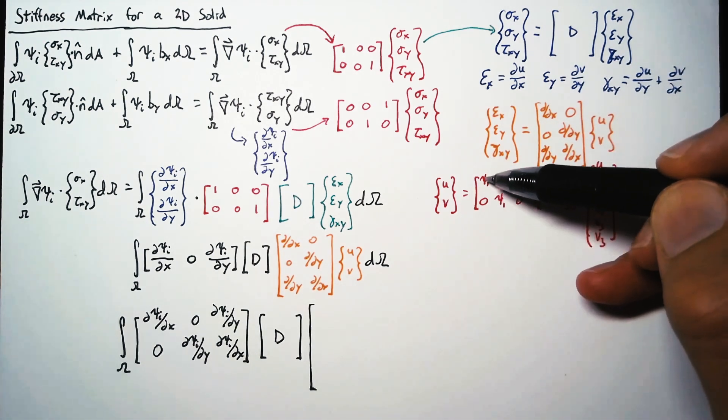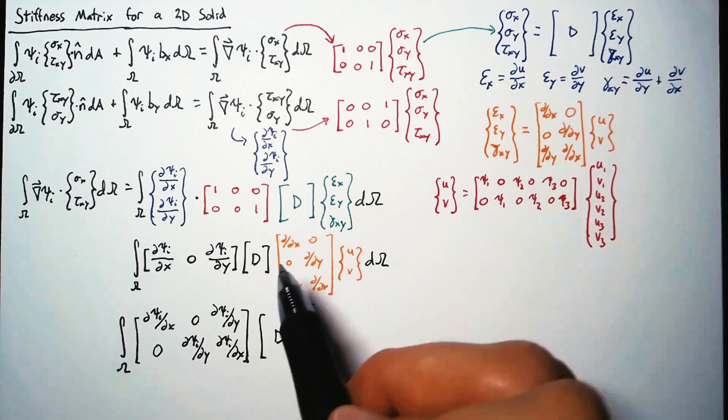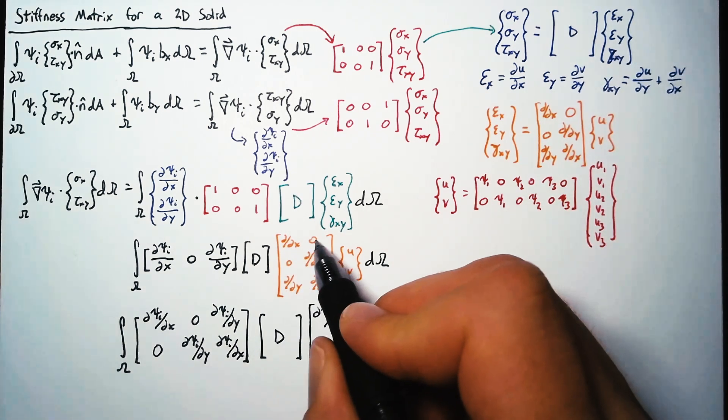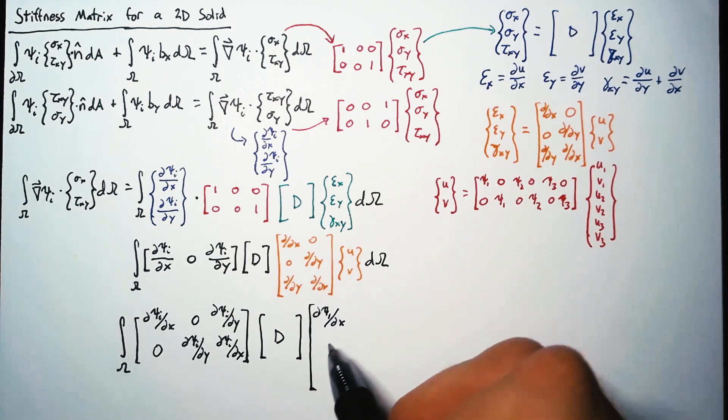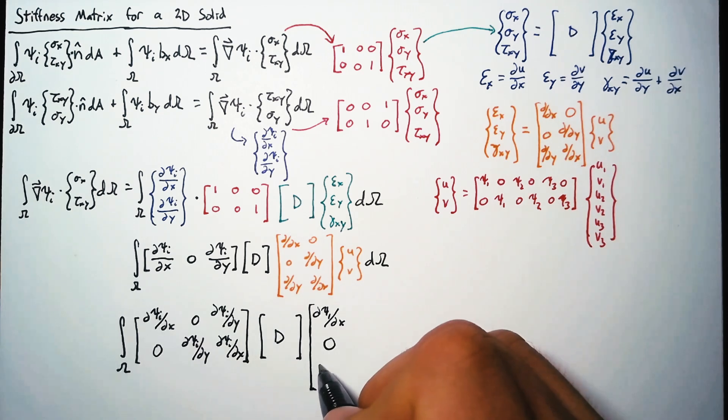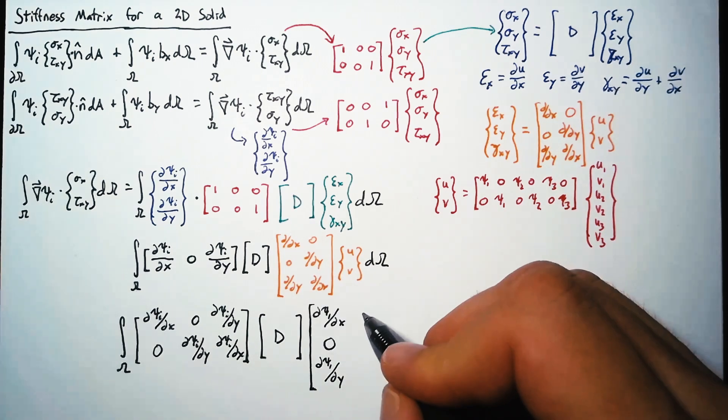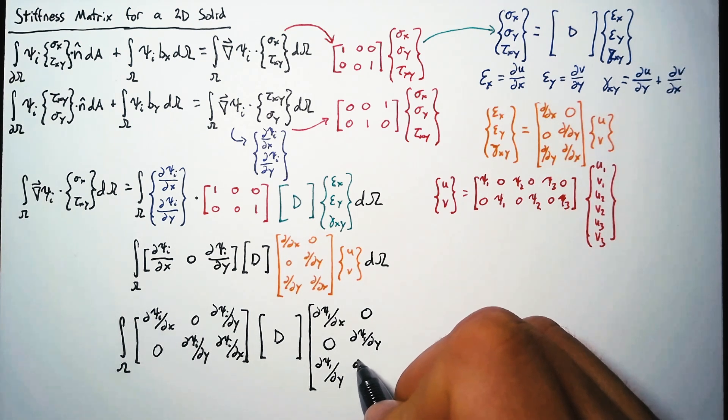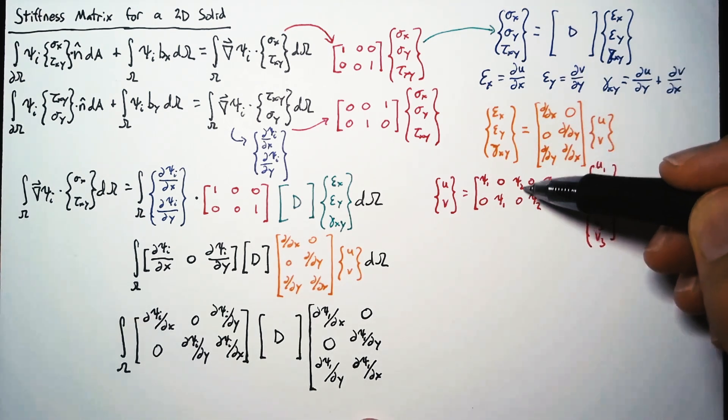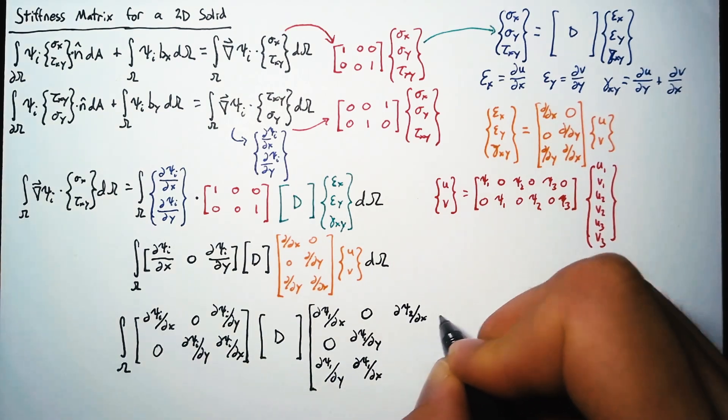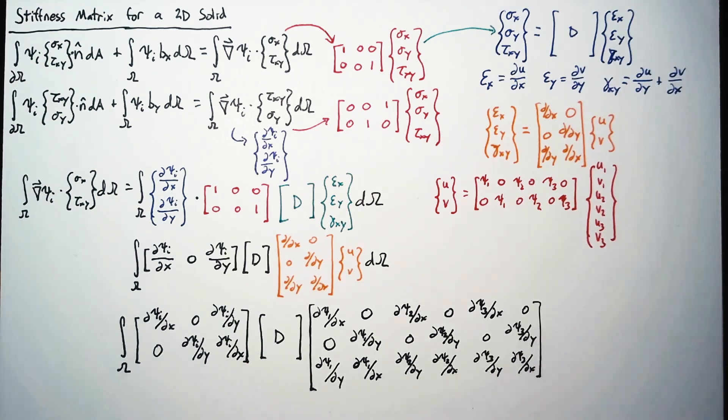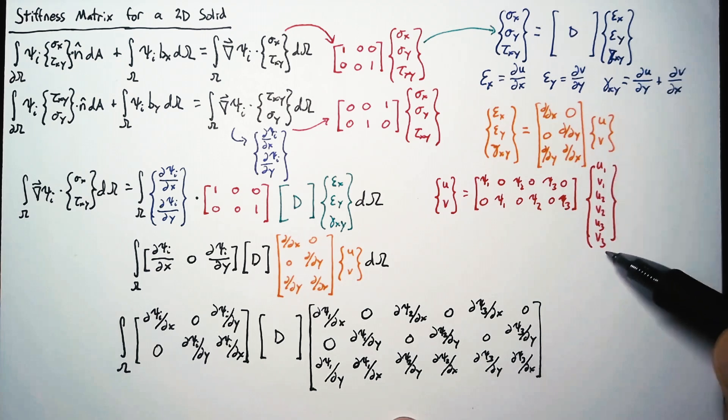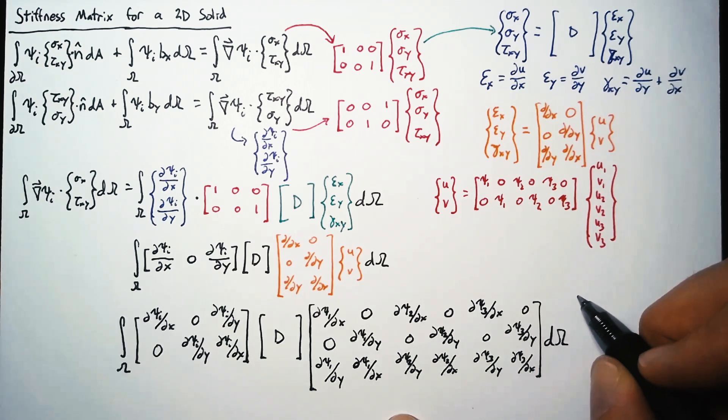So to find our first column, we take the first column of our shape function matrix here and multiply it in turn by each of these rows. So this will be d psi 1 dx, and then nothing from this place. And then we have d psi 1 dy. Then for our second column, there's nothing in our first row. The second row has d psi 1 dy. And then the third row has d psi 1 dx. And this pattern is copied as we go through, just for psi 2 and psi 3. Now, this vector, we can multiply by that, but these are all constants. These do not change with space. There are nodal positions, so we can move those outside of the integral.